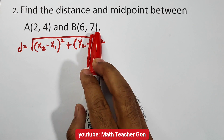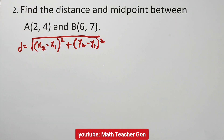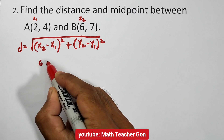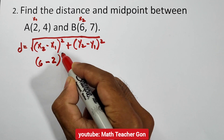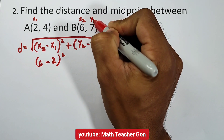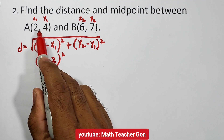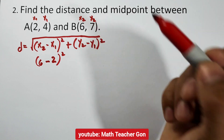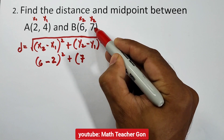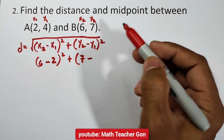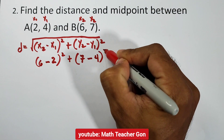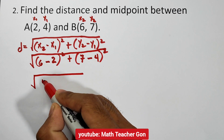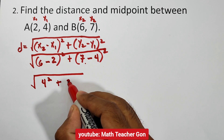From the given points A and B, the distance AB: x_sub1 is 2 and x_sub2 is 6, so 6 minus 2 squared. For y, y_sub2 is 7 and y_sub1 is 4, so plus 7 minus 4 squared. 6 minus 2 is 4, and 7 minus 4 is 3. So we have the square root of 4 squared plus 3 squared.